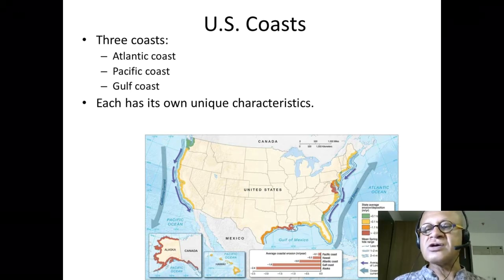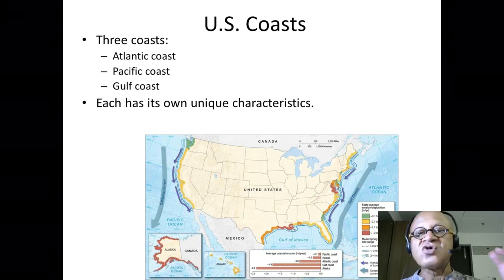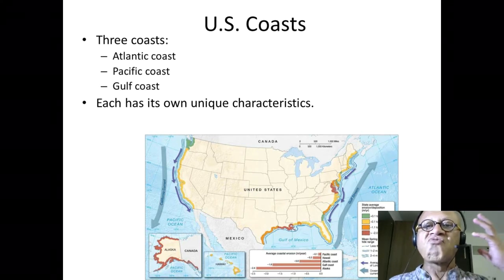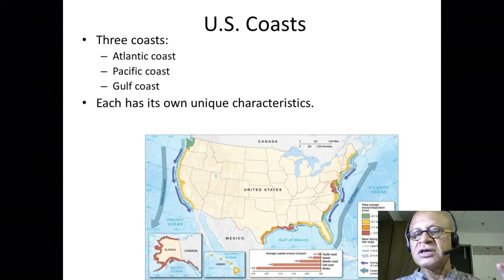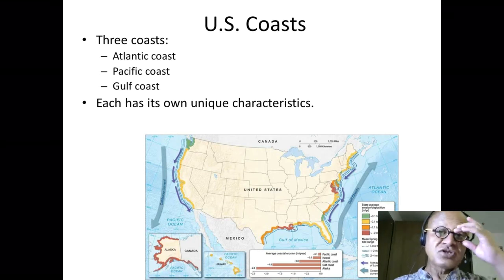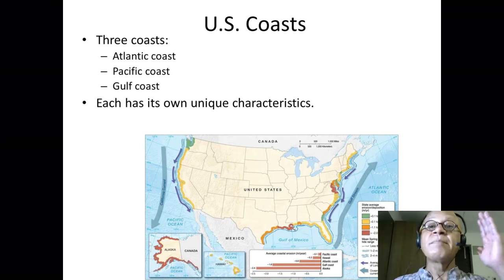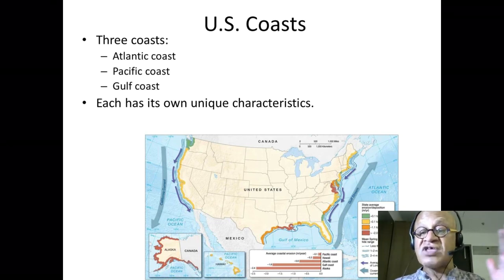There are three coasts — the Atlantic Coast, the Gulf Coast, and the Pacific Coast — and the average erosion per year is shown here. The Pacific Coast is not very erosional because it has already eroded all the soft material and is left with rocky shores, whereas Hawaii is still eroding a little bit. The Atlantic Coast is eroding almost 0.8 meters per year — that's not small. If you're building closer to the coast you have to be really aware of it. Plus, the Atlantic Coast is a depositional coast, so barrier islands are going to be affected by this rate of erosion.